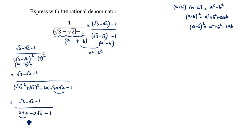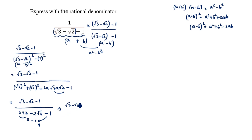Adding 3 plus 2 gives 5, and 5 minus 1 gives 4. So the expression becomes root 3 minus root 2 minus 1 divided by 4 minus 2 root 6.